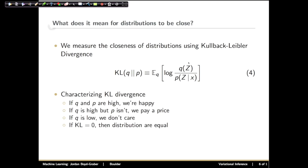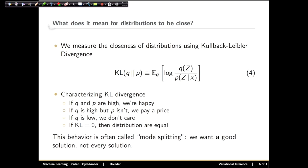Whenever q is low, since it's in the numerator, we don't care what's going on. You'll notice that if the KL divergence is exactly zero, then the distributions are equal — you have the expectation of the log of one, which is zero. You'll also notice that this is not symmetric. We don't care about places where p is high but q is not. So what we're really looking for is a solution — not every solution. The answer that we get out for q should match some regions of p relatively well. This is often called mode splitting, where we're just choosing one solution out of several.